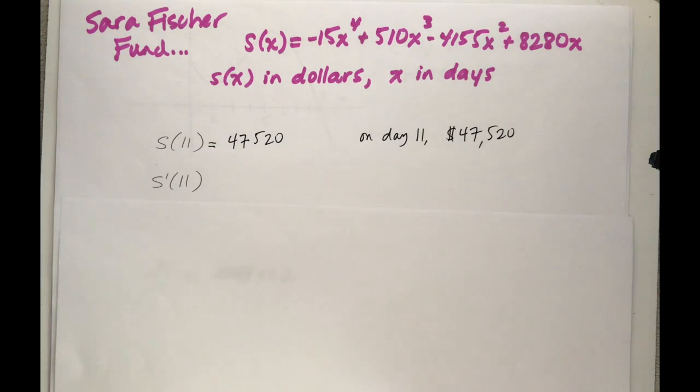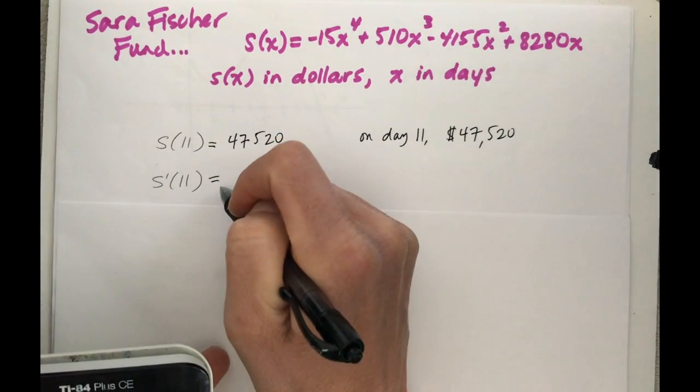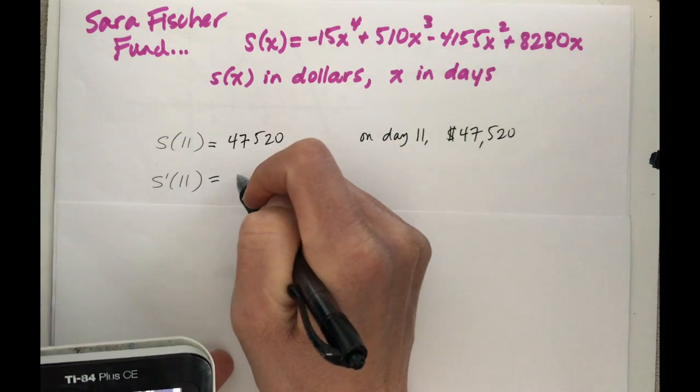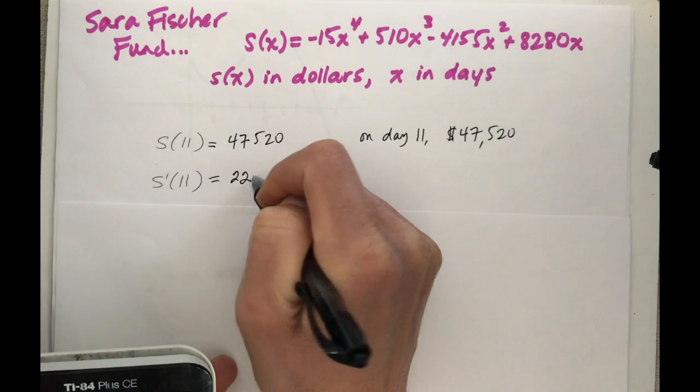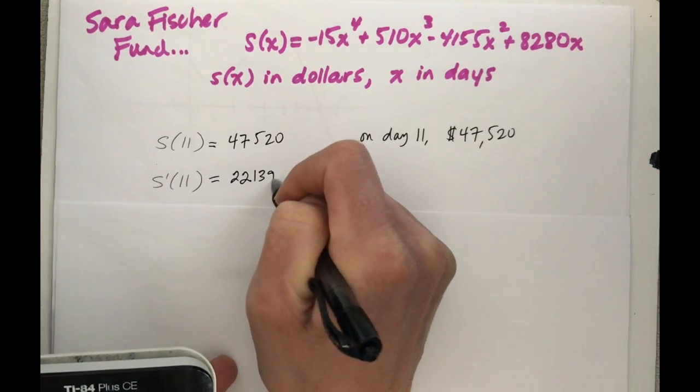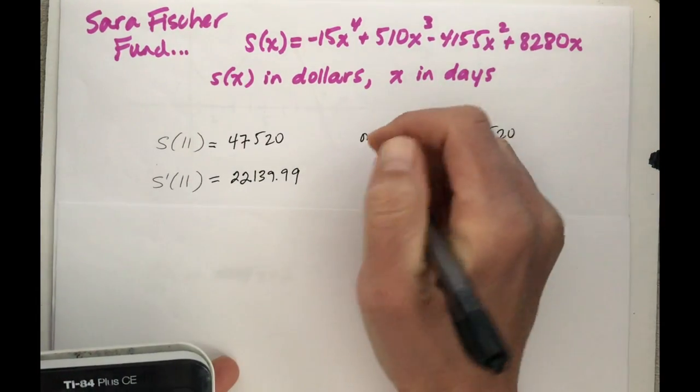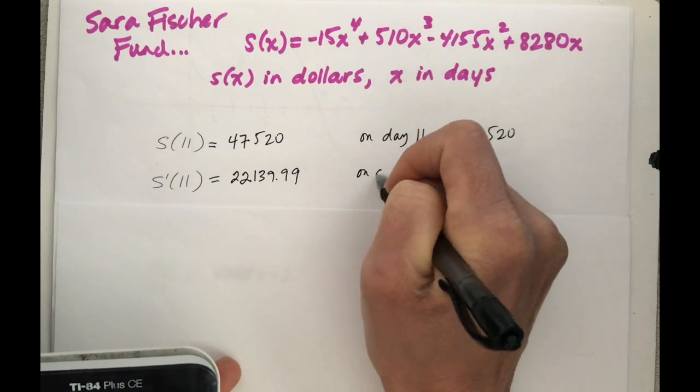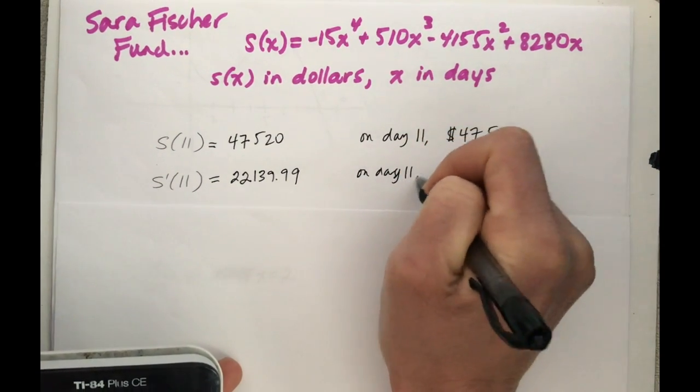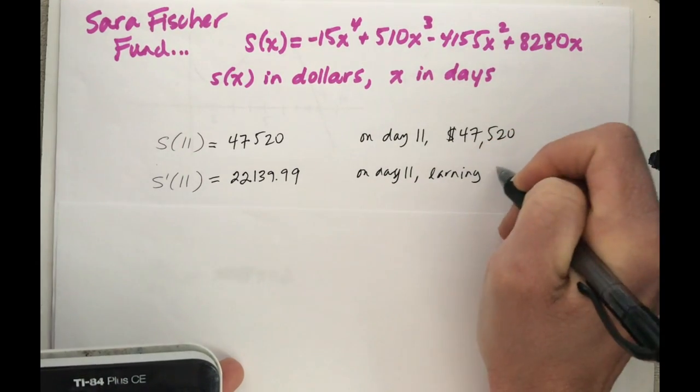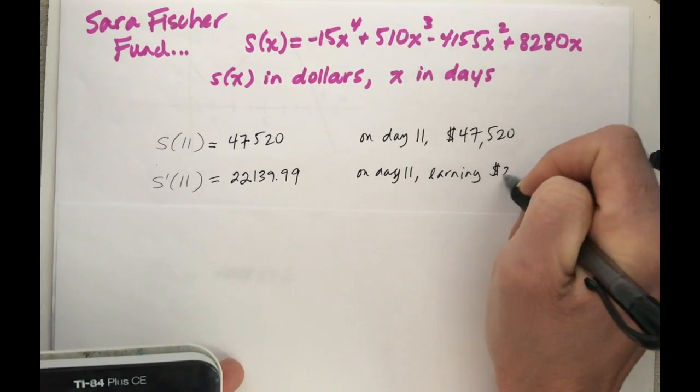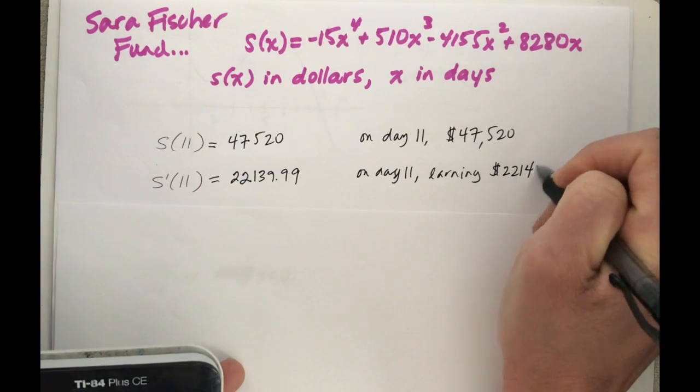Sarah Fisher fund doing well. The next expression I find is s'(11). And again I'm going to throw the function into my calculator, find the derivative on the 11th day, and that is $22,139.99. So on day 11 I am earning, my Sarah Fisher fund is earning, it is increasing by $22,140.